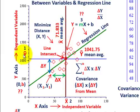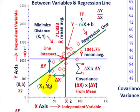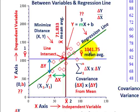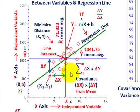The next thing you have to do is determine your average y value. You go y1 plus y2 plus y3, divide by the number of variables, and you come up with your average y mean at 1,041.75. These are the key values you have to work with when working with covariance.